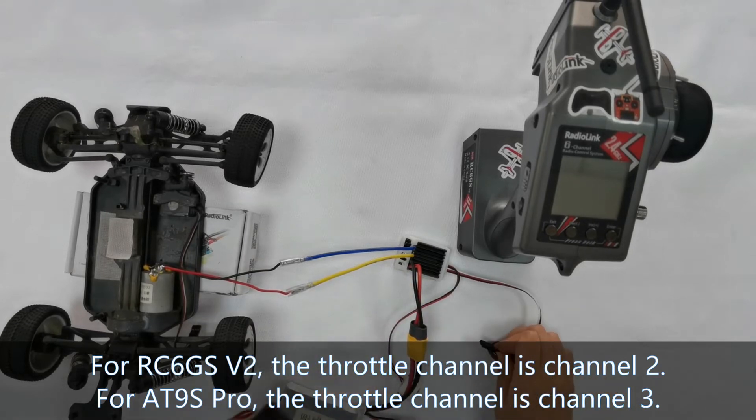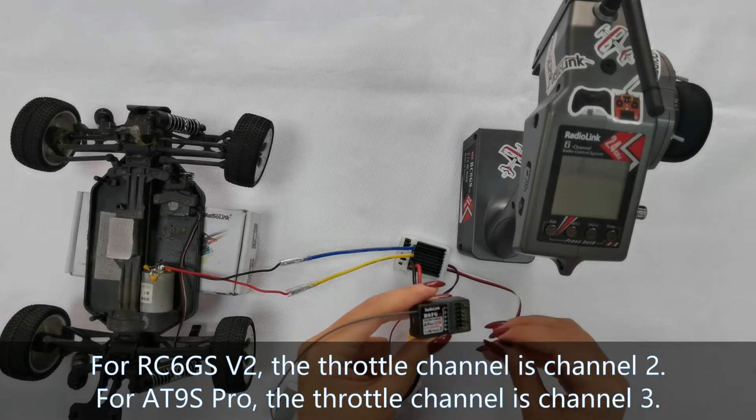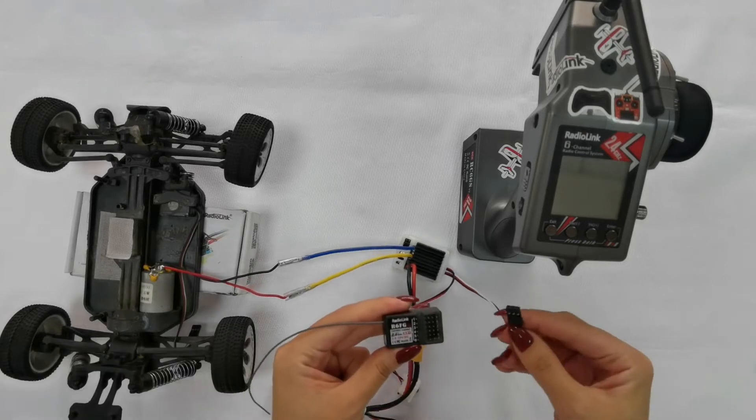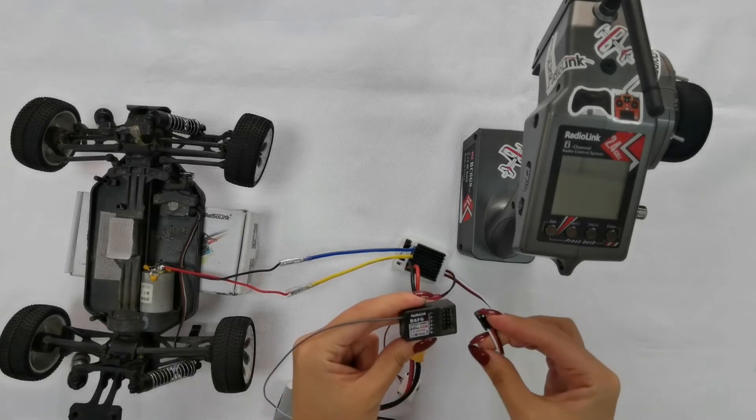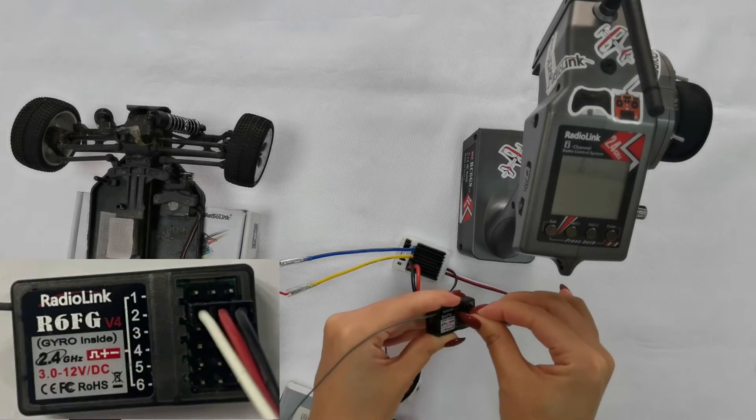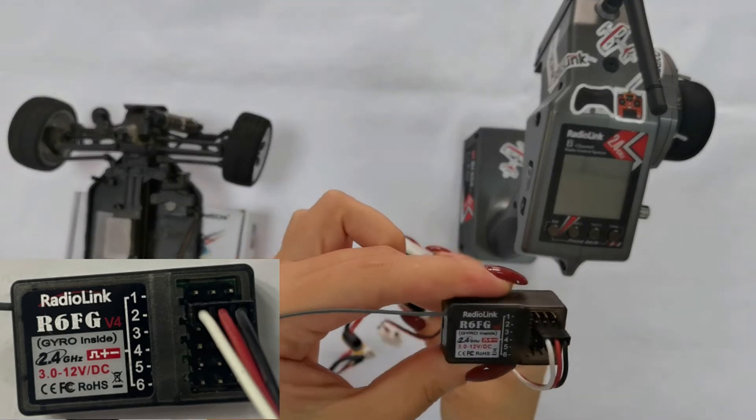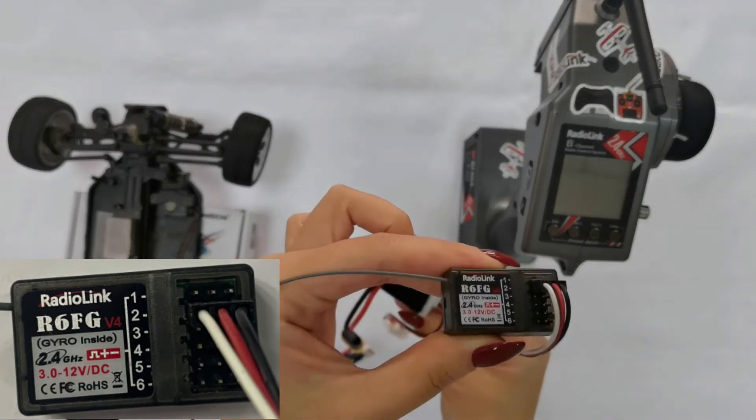If you use an aircraft transmitter such as AT9S Pro, the throttle channel is channel 3. Make sure the polarity is not reversed.